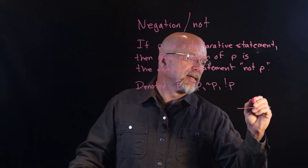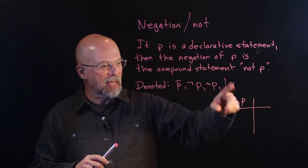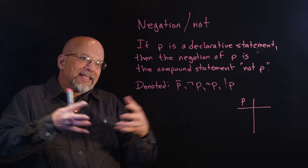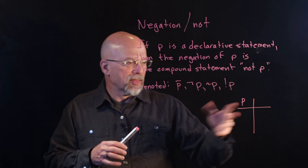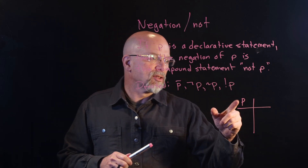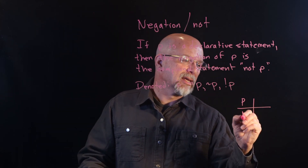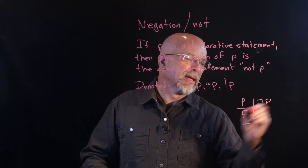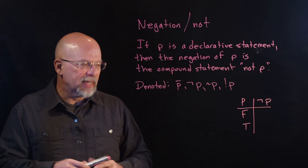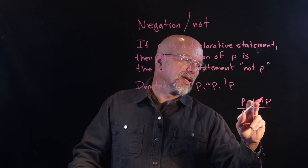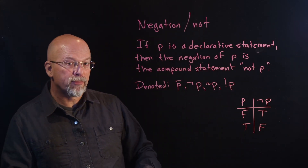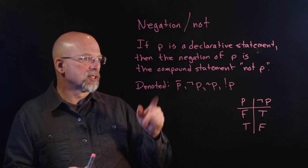We talked about in the previous lesson this idea of truth tables. On the left-hand side of the truth table, we've got columns that represent all the propositions being brought together to create a compound statement. In the case of negation, we only have a single proposition P. It can either be false or true. The compound statement is 'not P,' and after you apply the not to P, it flips it to the other value. Not false is true; not true is false. That is our truth table.